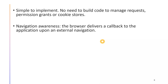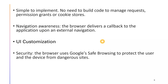Chrome Custom Tab has navigation awareness — the browser delivers a callback to the application upon an external navigation. So from application A, a callback is sent from the Chrome Custom Tab back to the application. It also offers UI customization: you can select the top bar, bottom bars, colors, animations, and how many tabs to be launched. Security is another major feature — the browser uses Google's Safe Browsing to protect the user and device from dangerous sites. Chrome Custom Tab makes use of this Safe Browsing feature.